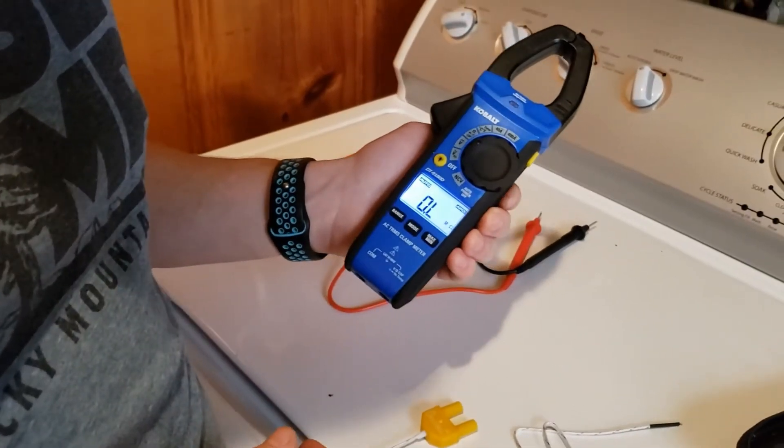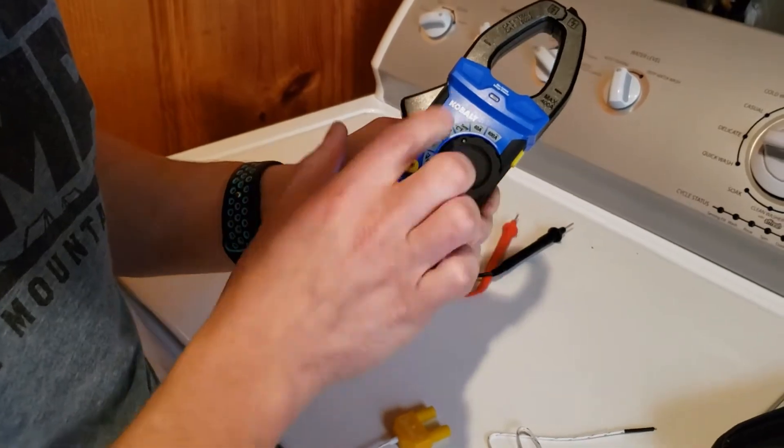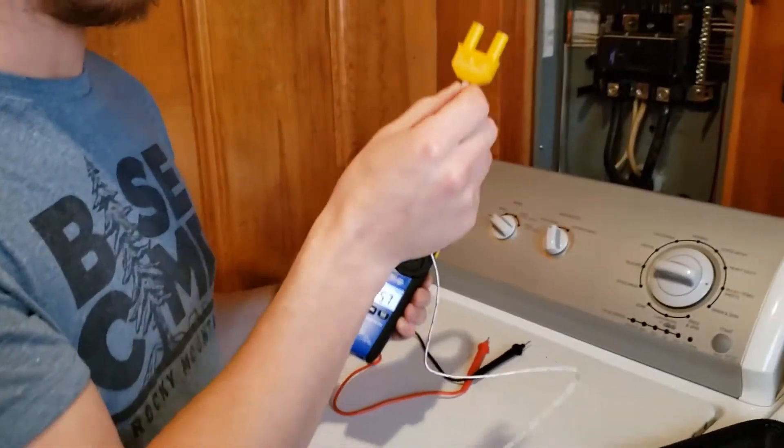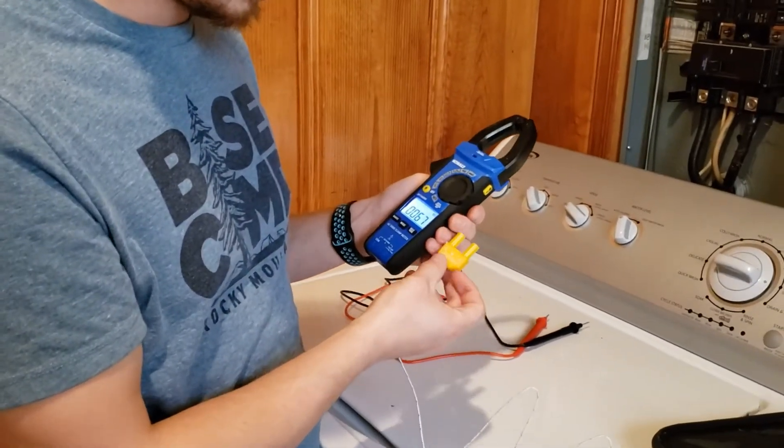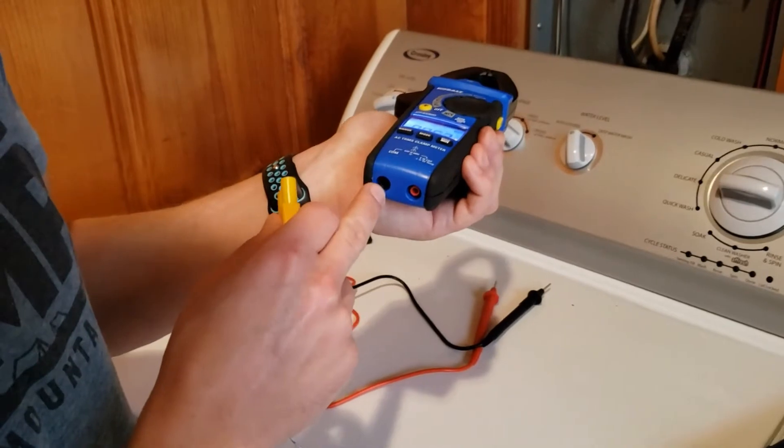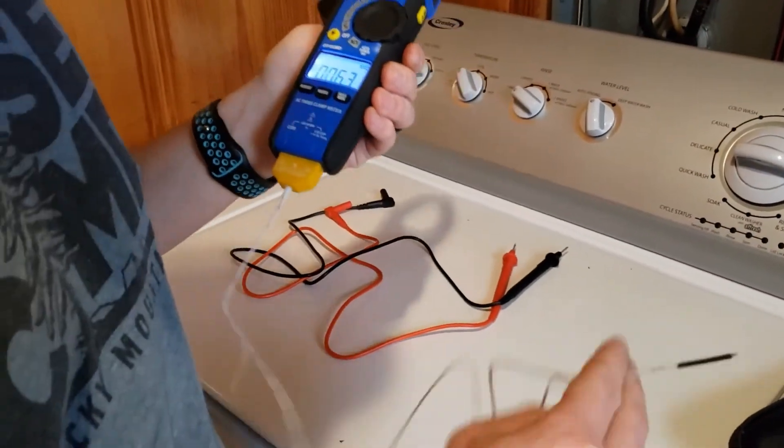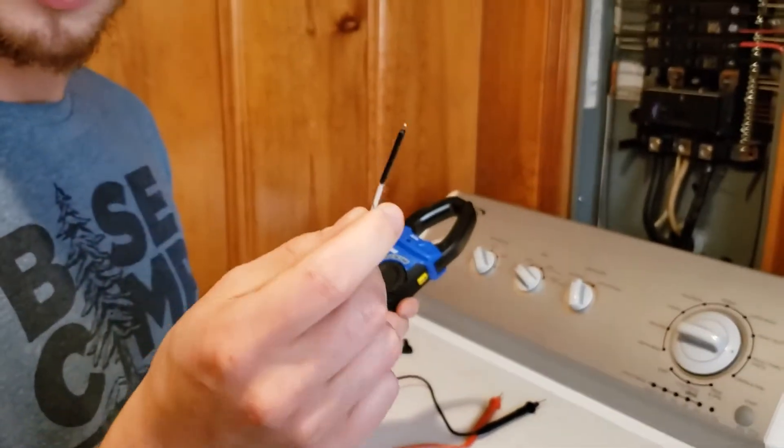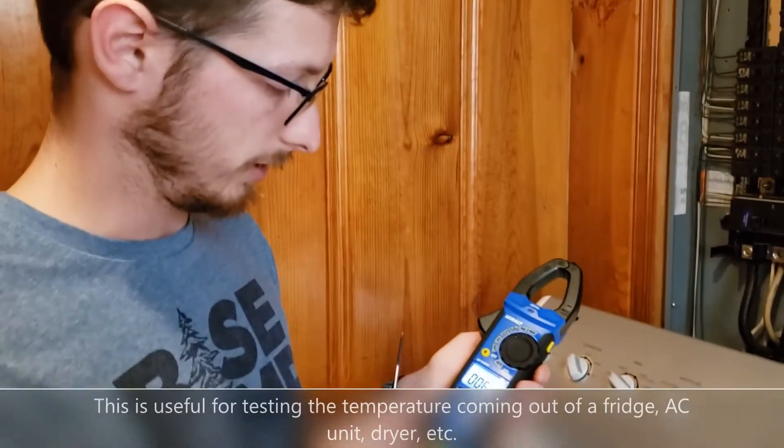Next thing you can do with this multimeter is you can take it and go to temperature. You take your little, this came with mine. You may have to get one. But you've got your positive, your negative, and you just plug that in. Your red is your positive, black is your negative. So plug that in like that. And you take this end, and you put that wherever you need to read the temperature. And it will let you know whatever the temperature is.